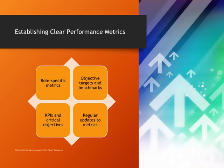These targets should be specific, measurable, achievable, relevant, and time-bound — SMART. Identify key performance indicators (KPIs) and critical objectives that family members should focus on to contribute to the business's overall success. Ensure that performance metrics are regularly updated to reflect changing business priorities and objectives.